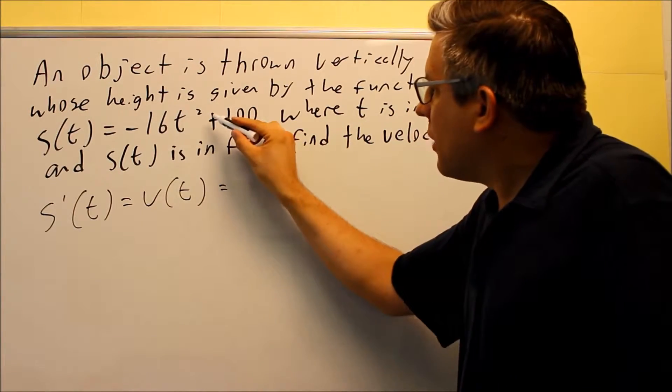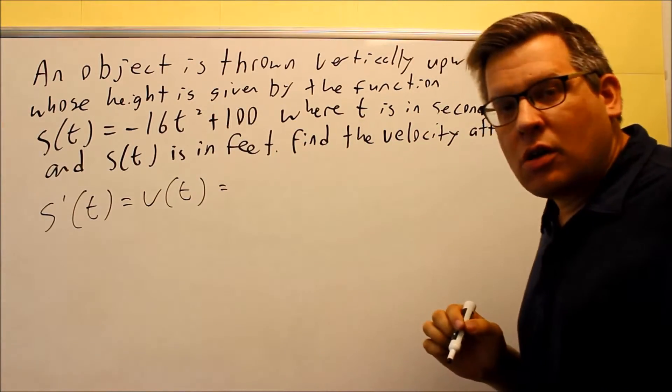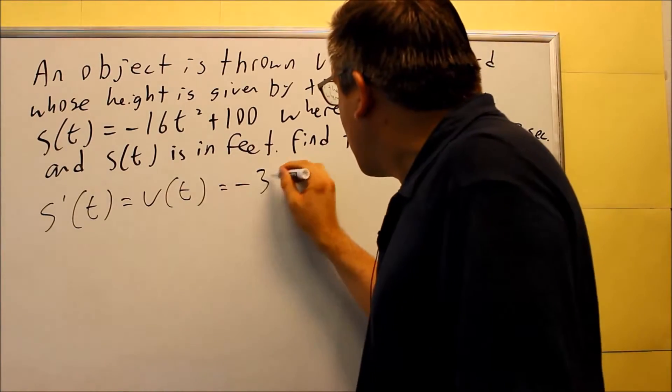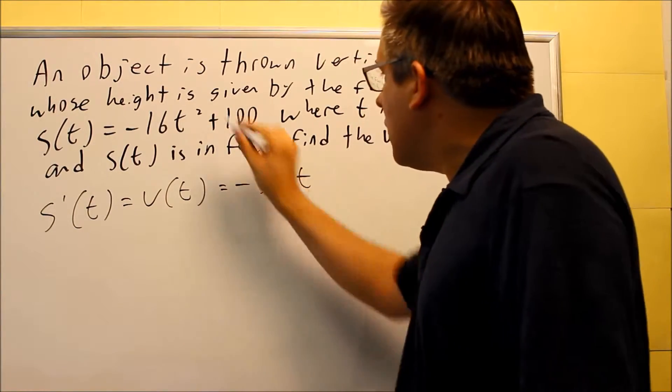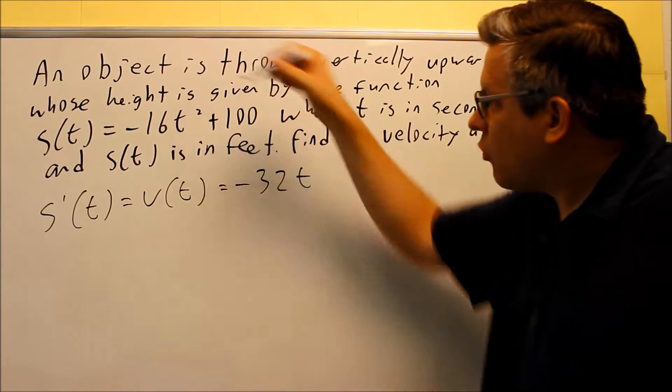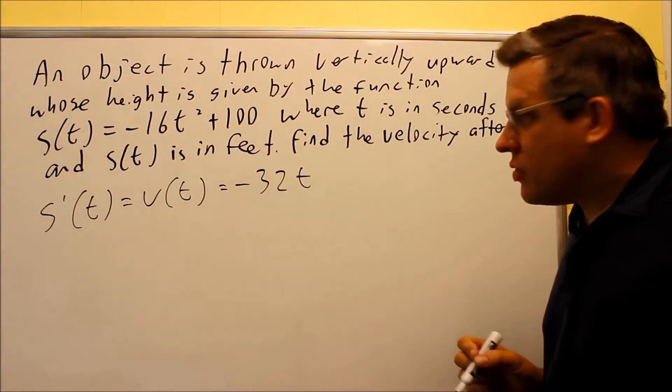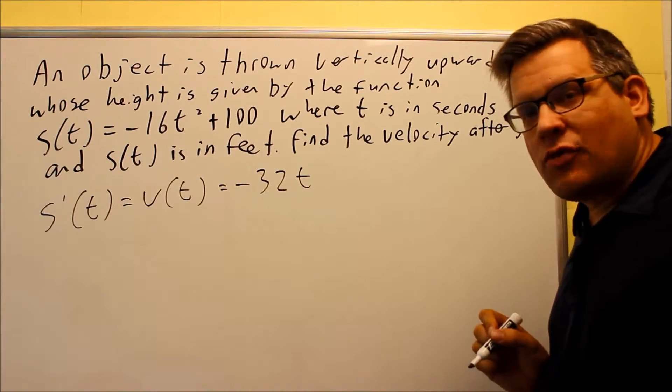When we do that derivative of the velocity, we can use the power rule again. 2 comes down, times negative 16, you get negative 32. Then you have t to the first power, so subtract 1 from that. Derivative of 100 is 0. So this is your velocity function.